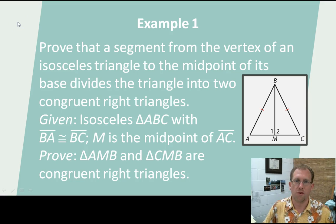So here's a proof that we could do together. I've got an isosceles triangle, ABC, and I have a line going from the vertex to the midpoint of the base. So given isosceles triangle ABC with BA congruent to BC, the two sides here are congruent, that's the definition of an isosceles triangle, and M is the midpoint of AC, I want to prove that AMB and CMB are congruent right triangles. So how would we do that? Let's just talk it through.